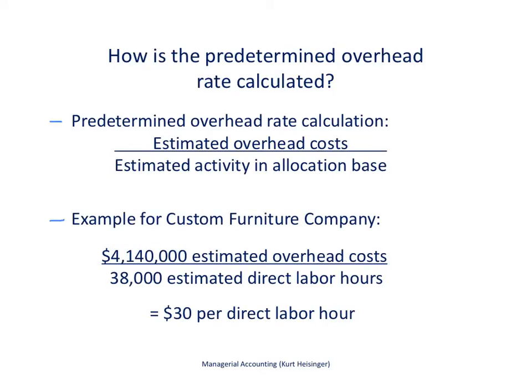The predetermined overhead rate is calculated before the upcoming accounting period begins. It gives us a way to allocate overhead costs to individual jobs as we complete them, rather than waiting until the end of the year to see actual overhead costs and then going back to allocate them. Using a predetermined overhead rate allows us to accumulate all product costs — direct materials, direct labor, and manufacturing overhead — for each job as we work on it.